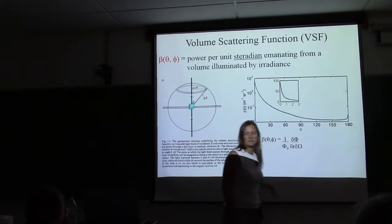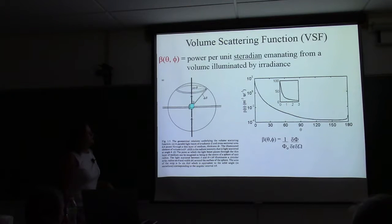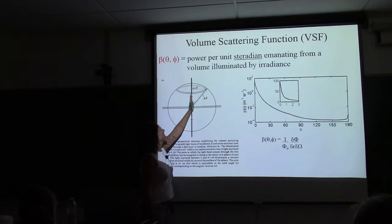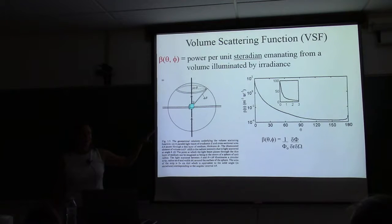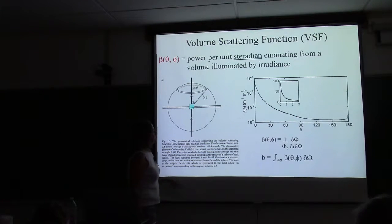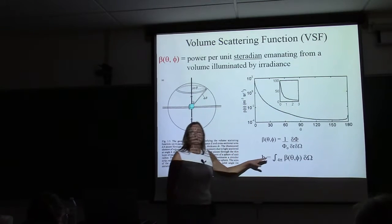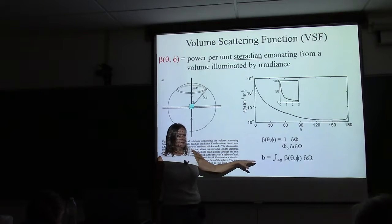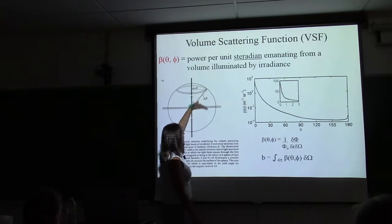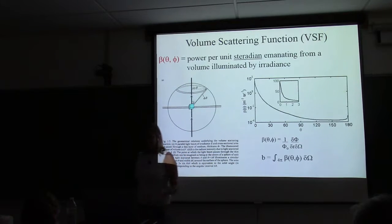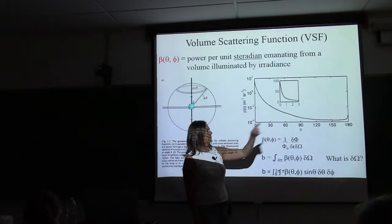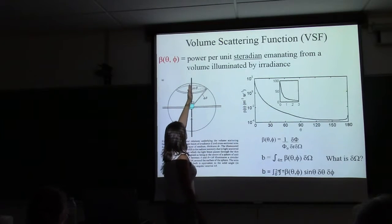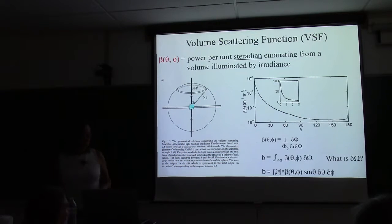If you integrate the whole volume scattering function curve over the solid angle, that gives you the scattering coefficient — you're summing up the loss of light out of the beam for all angles and all azimuth angles. The solid angle element is sin(theta) d-theta d-phi, so you integrate d-phi over 2-pi and theta from 0 to pi to integrate over all solid angles.